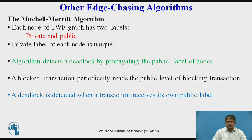Edge chasing algorithm: the Michel-Merit algorithm. In the deadlock detection algorithm of Michel and Merit, each node of the transaction wait-for graph has two labels: private and public. The private label of each node is unique to that node, and initially both labels at a node have the same value. The algorithm detects a deadlock by propagating the public label of nodes in the backward direction in the wait-for graph.